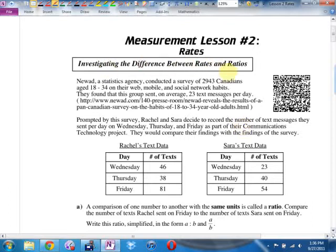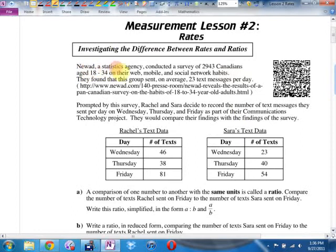But I will be using those words in context and expecting you to know what I mean by them. So you are going to need to know this. Investigating the difference between rates and ratios. It starts out, a stats agency did a survey of some Canadians asking how many text messages do you send per day on average. They found between ages 18 to 34, on average, that age group sent 23 text messages a day.